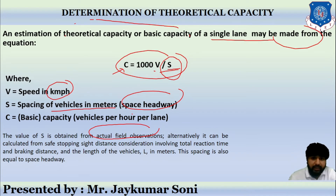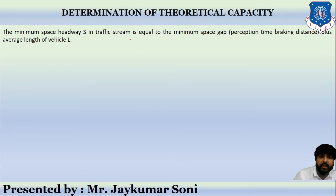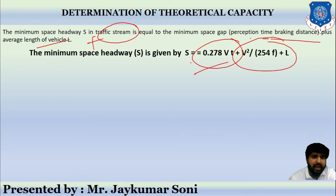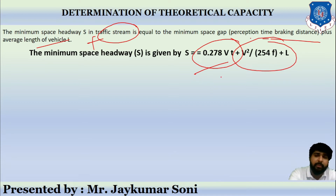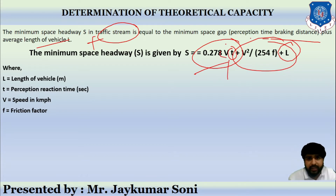Alternatively, S can be calculated from safe stopping sight distance considerations involving total reaction time and braking time: S = Vt + V²/2gf. The minimum space headway equals the minimum space gap plus the average length of the vehicle. The complete equation is: S = 0.278Vt + V²/254f + L, where L is the length of the vehicle, t is perception time per IRC criteria, V is speed in km/h, and f is the friction factor.